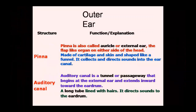Its shape also partially shields sound waves that approach the ear from the rear, therefore enabling a person to tell whether a sound is coming directly from the front or the back. Because of the shape, sound waves are partially shielded, so you can identify which direction the sound is coming from.